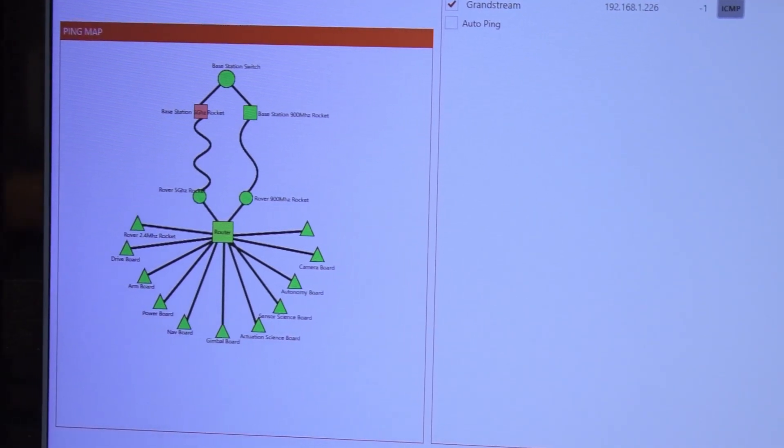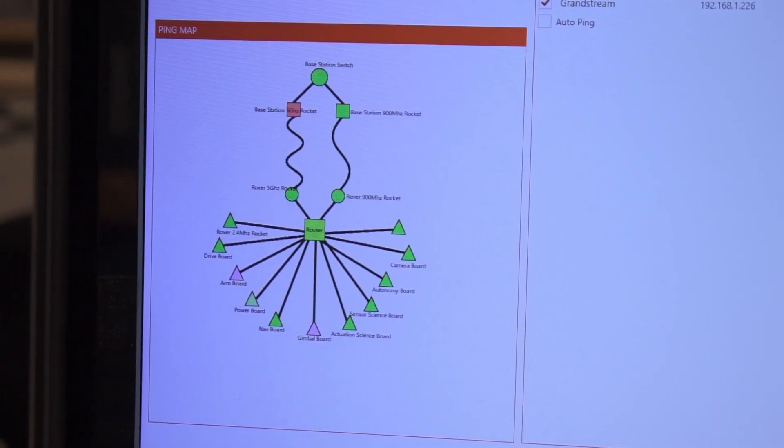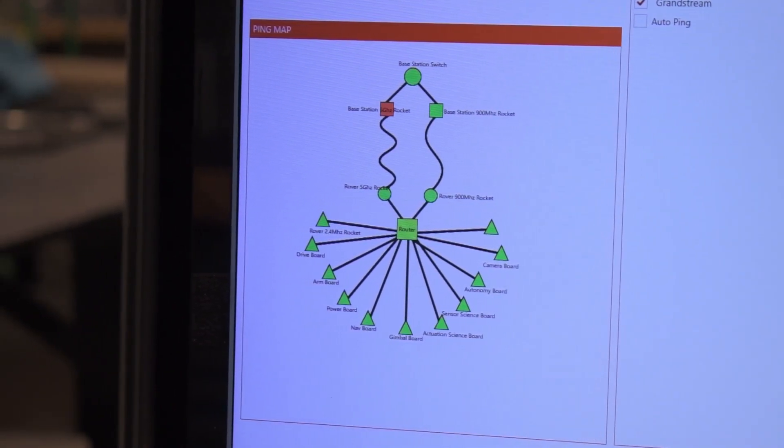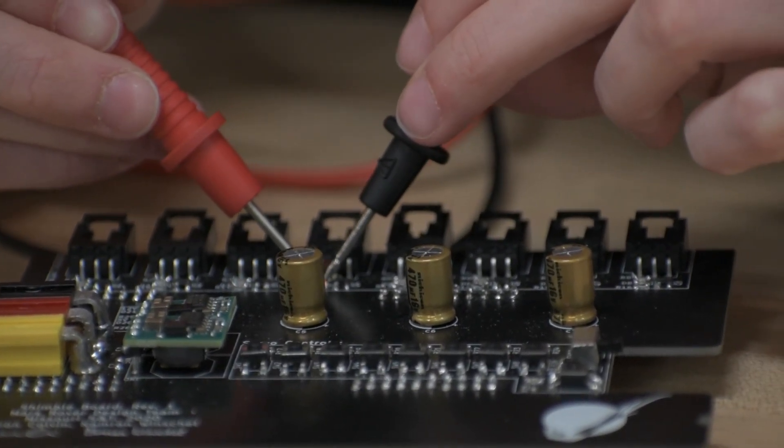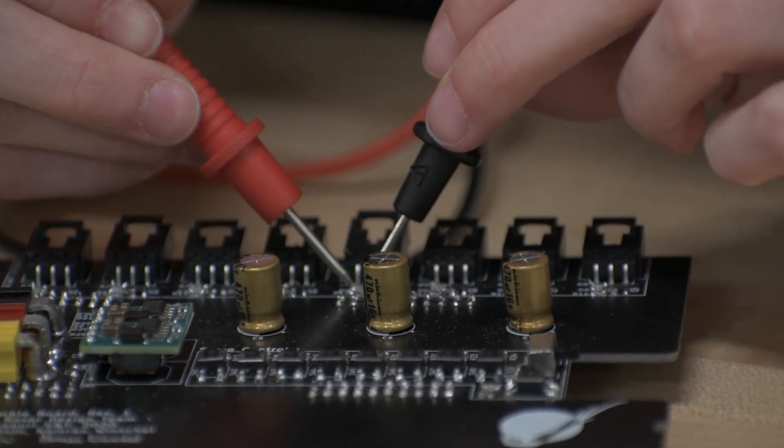These systems provide operators with an insight into the rover's state, while an Attachments Manager displays results from the science hardware and allows precise control of the arm. To ensure safety, all electrical and software components follow a rigorous system of reviews and tests before integration.